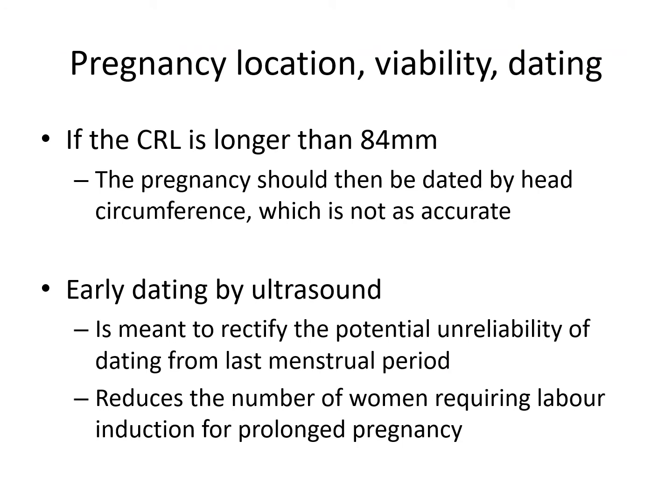If the crown-to-rump length is more than 84 millimeters, which it should be beyond 13 weeks and six days, then the pregnancy should be dated by the head circumference — the circumference of the fetal head — which is not as accurate as the CRL. The general rule is that the earlier the gestation you can get a measurement, the more accurate the dating. Head circumference tends to be used for pregnancies between 14 weeks and 20 weeks of gestation.